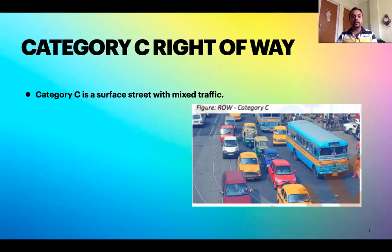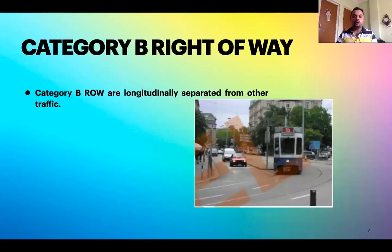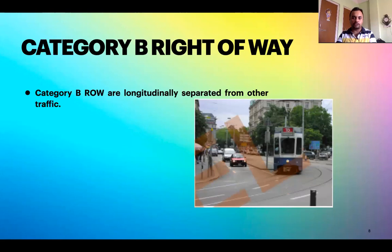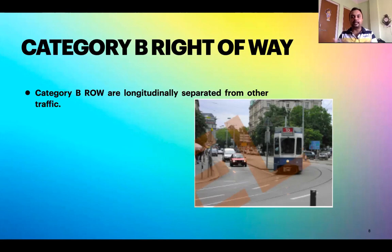Most places for buses have right of way category C. In only advanced, well-planned cities do we have better categories. Right of way category B is where there is a longitudinal separation. Though the public transportation uses the same overall route, there are markings or designations indicating that this particular lane is only for buses or certain vehicles, while cars, bicycles, and pedestrians move in other locations. Category B is a bit better than category C.